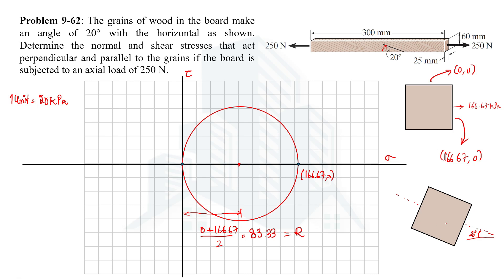Moving further: if the element is rotated by 20 degrees on the actual element, then on the Mohr's circle the rotation is doubled, so it becomes 40 degrees, and the rotation is clockwise. On the Mohr's circle, one point represents the state of stress on one plane and another point represents the state of stress on the other plane. We want to determine the state of stress parallel to the grain, so this side is rotated 40 degrees on the Mohr's circle.